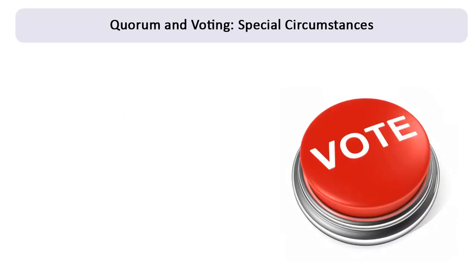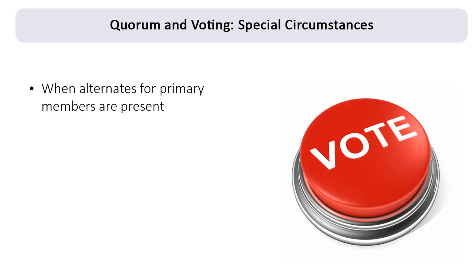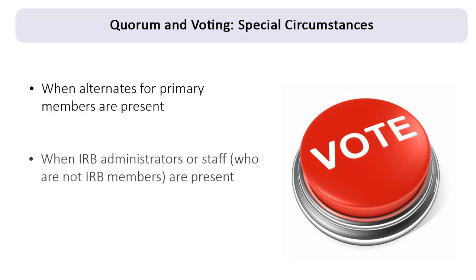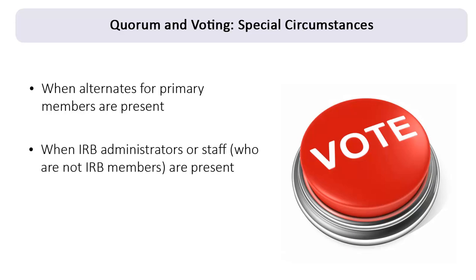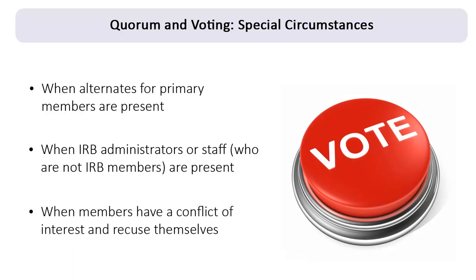Certain circumstances may require additional attention when determining quorum and counting votes for IRB actions. These special circumstances include when alternates for primary members are present, when IRB administrators or staff who are not IRB members are present, and when members have a conflict of interest and recuse themselves. Let's consider each of these situations.